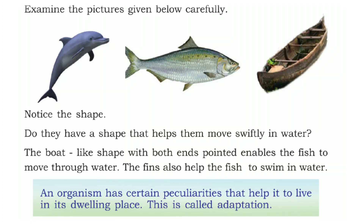These types of special characters are present in all organisms. These specialities help organisms to live in their dwelling place. This type of peculiarity that helps an organism live in its dwelling place is called adaptation. Adaptation is the important concept here.